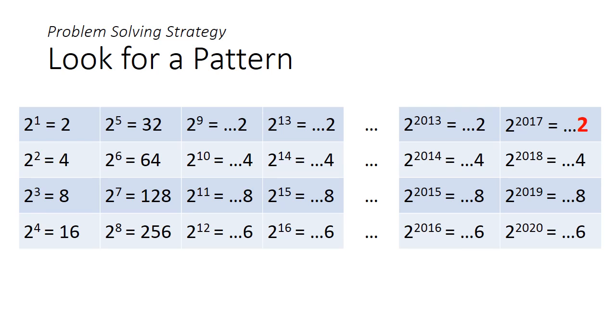Since this pattern will repeat every 4 powers, it would be advisable to look for the nearest multiple of 4, closest to 2017, to continue this pattern. In this case, this would be 2016. So 2 to the power of 2016 would have a last digit of 6, and if you continue the pattern from there, the last digit for 2 to the power of 2017 will be 2.